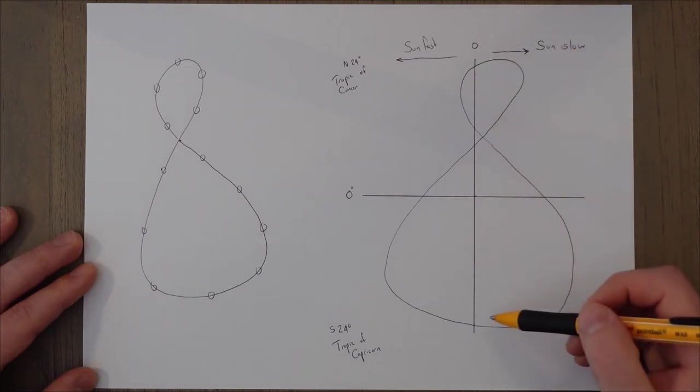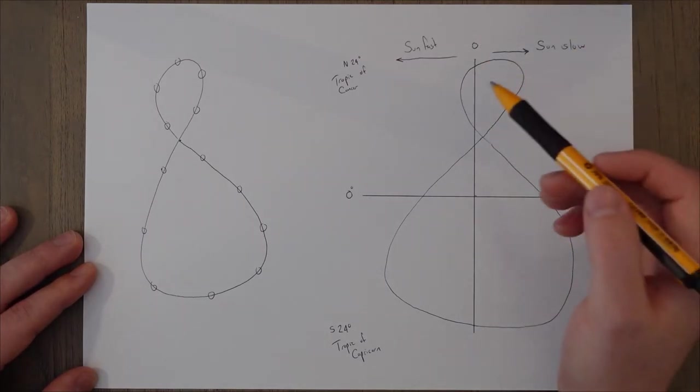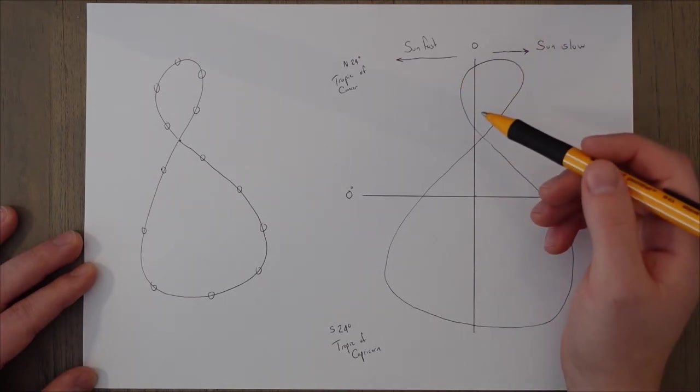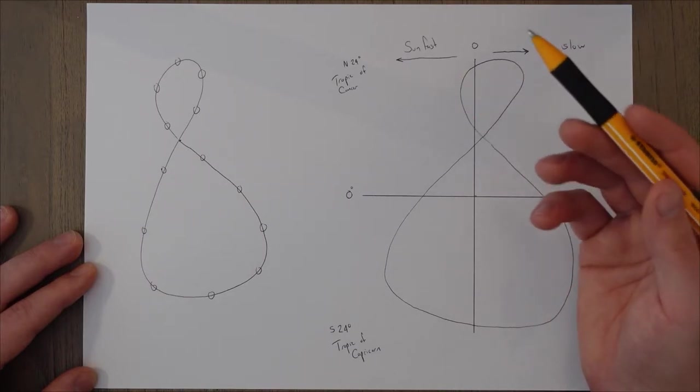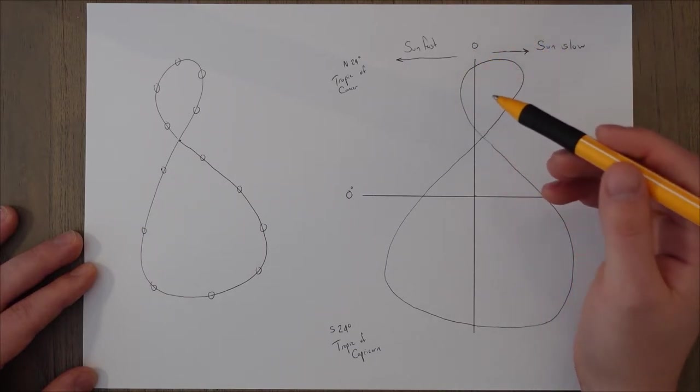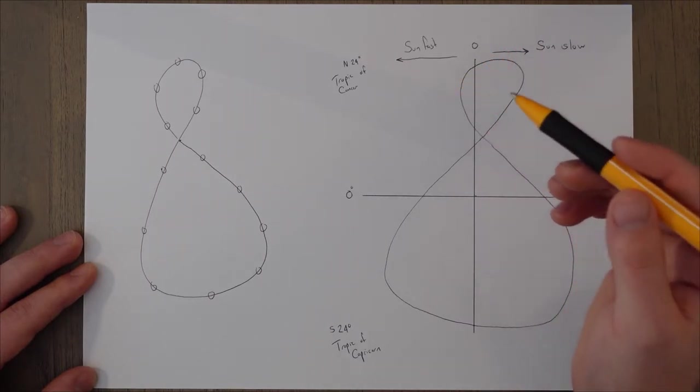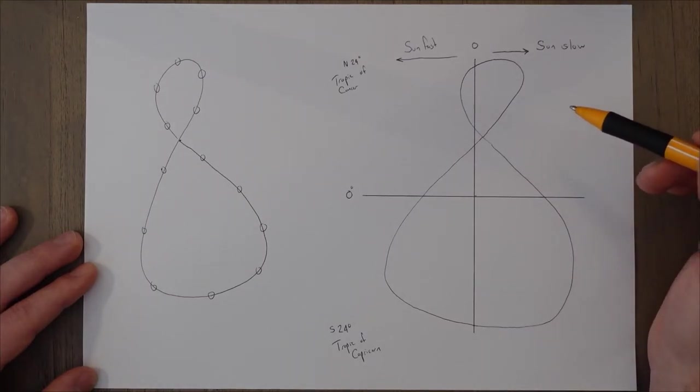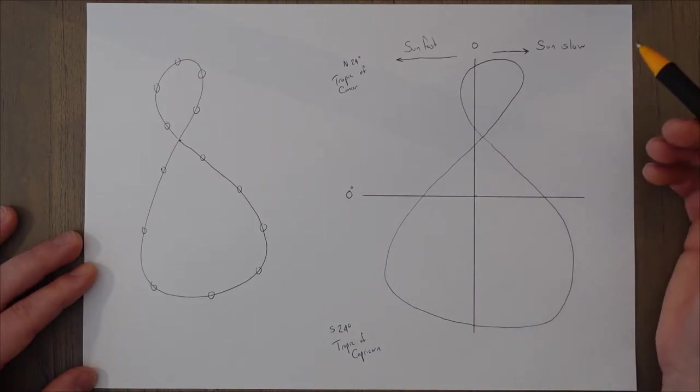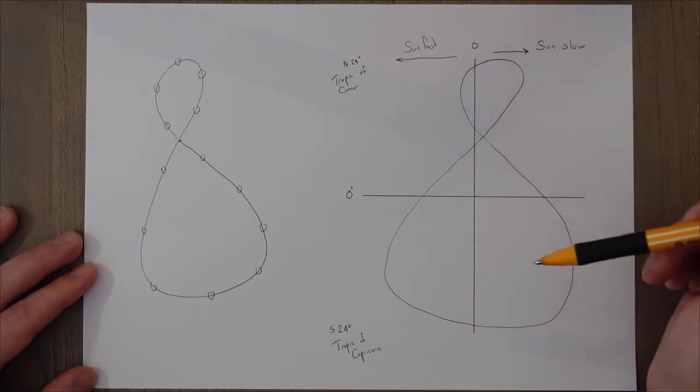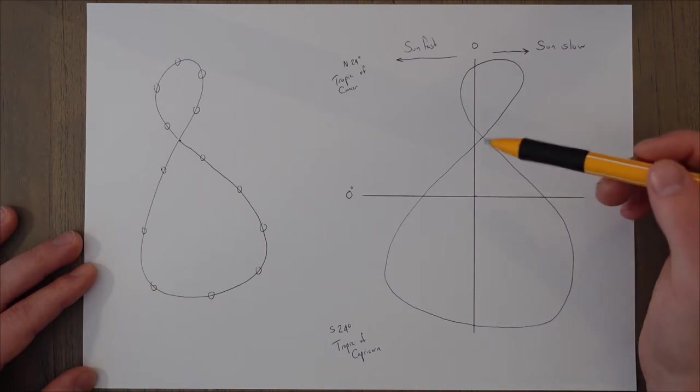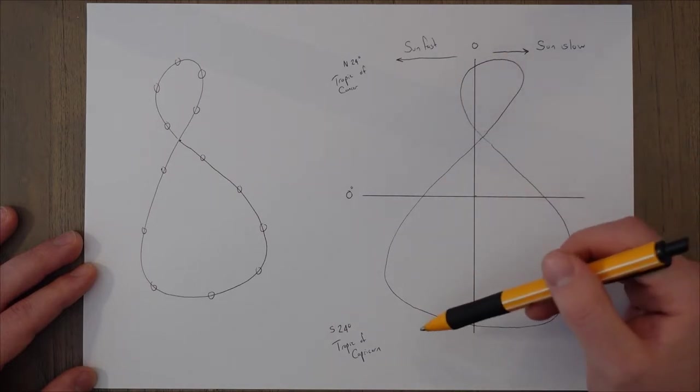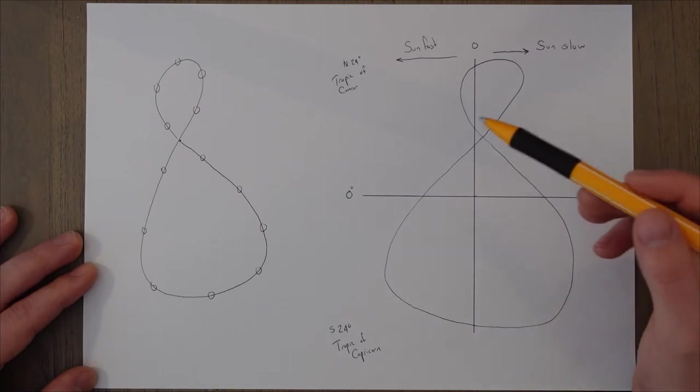And on this graph, we have the zero position being the average sun, the mean sun throughout the year. The regions to the left of the line are called sun-fast regions, and that means that the sun will reach its highest position in the sky before midday, before the mean sun. And to the right is where the apparent sun is slow, and it reaches its highest point in the sky after midday. And the vertical axis represents the declination. And you can see the sun only ever gets directly overhead at the tropics. It only goes up to 24 degrees north and 24 degrees south.